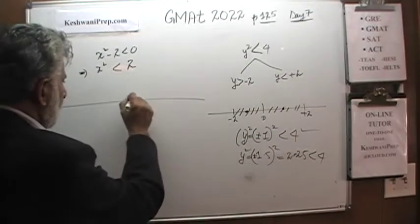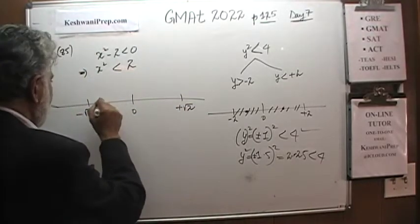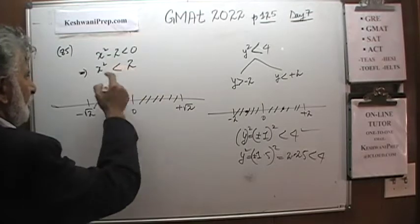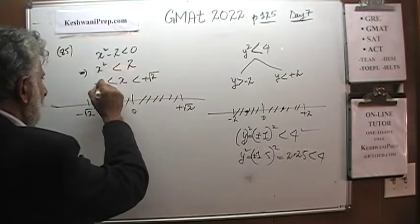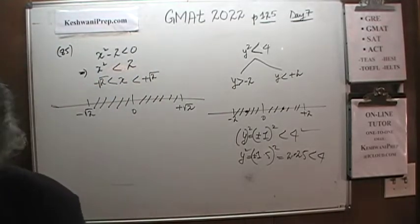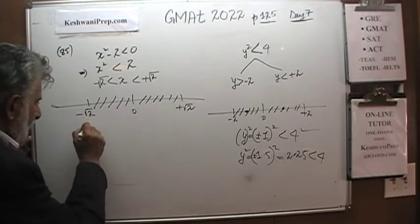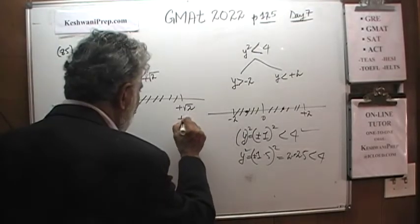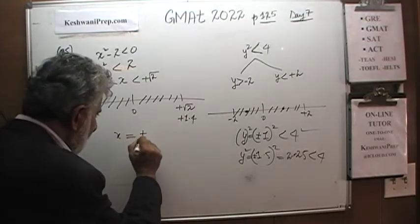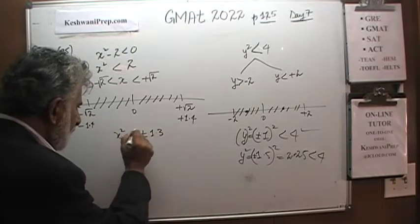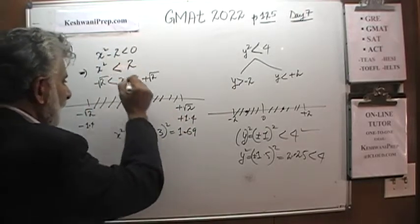The solution set to this inequality lies between negative 2 and positive 2. The same exact thing is going on here. The solution set is going to lie between negative square root of 2 and positive square root of 2. That's the answer. x has to be greater than negative root of 2 and less than positive root of 2. We know the square root of 2 is 1.4, so it has to fall between negative 1.4 and positive 1.4. Anything in between would work.